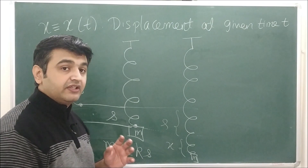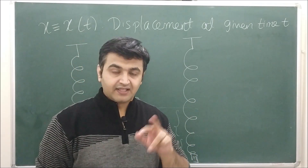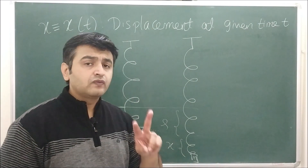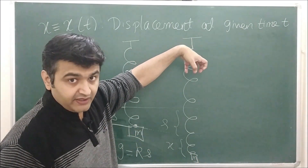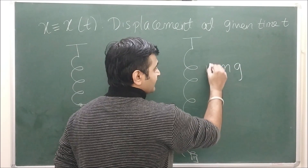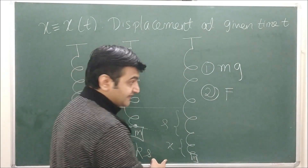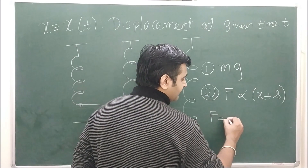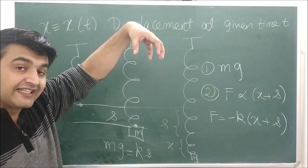We use Newton's second law: the sum of all forces equals mass times acceleration, F = ma. For an undamped system there are only two forces: the gravitational force mg pulling down, and the restoring force from the spring pulling up. By Hooke's law, the restoring force is proportional to the total displacement (s + x), so the restoring force is minus k(x + s), where the negative sign indicates it acts upward.